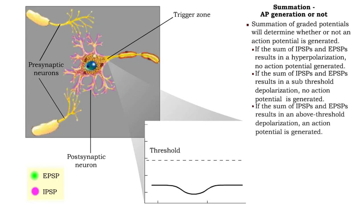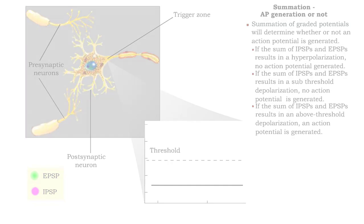Or, IPSPs and EPSPs summate, resulting in an above-threshold depolarization. Now an action potential is generated.